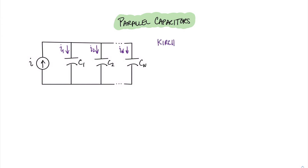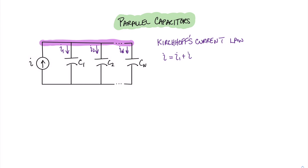This naturally leads us to how we determine the equivalent capacitance of a set of parallel capacitors. All we're going to do is apply Kirchhoff's current law. Kirchhoff's current law says that all of the currents entering the node must equal all the currents leaving the node. Since all of these capacitors are in parallel, the node at the top of this circuit is all the same node. So I can write that i equals i1 plus i2 plus ... plus i sub n.